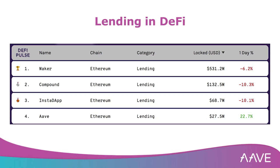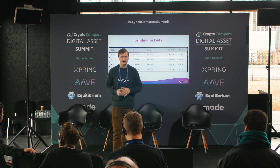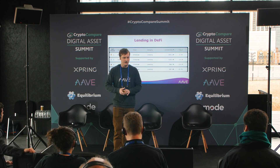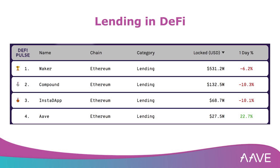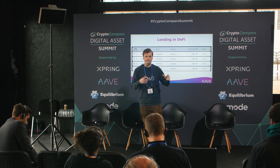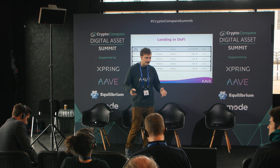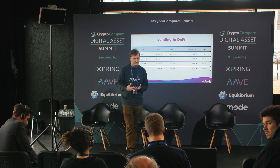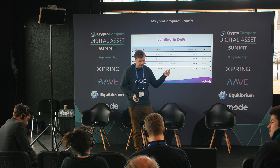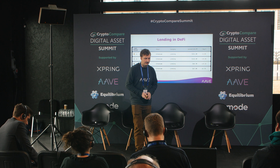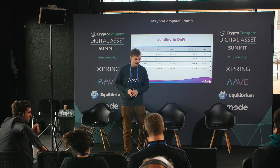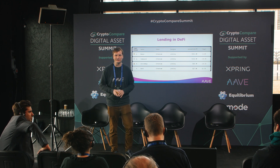In DeFi, you interact with smart contracts rather than custodial services, so you keep control of your own assets. The lending space has been one of the biggest areas in DeFi. I'm pretty sure derivatives — such as those being built by projects like Vega — will become even bigger, but currently the DeFi space is largely built on lending infrastructure. Since we launched, Aave has been growing nicely and we have solid market size and liquidity.